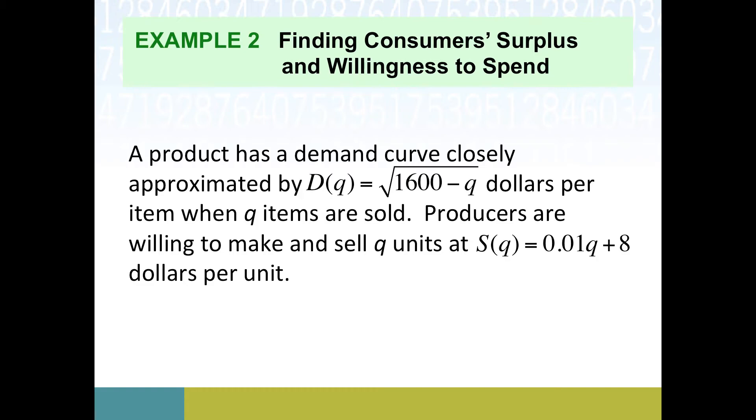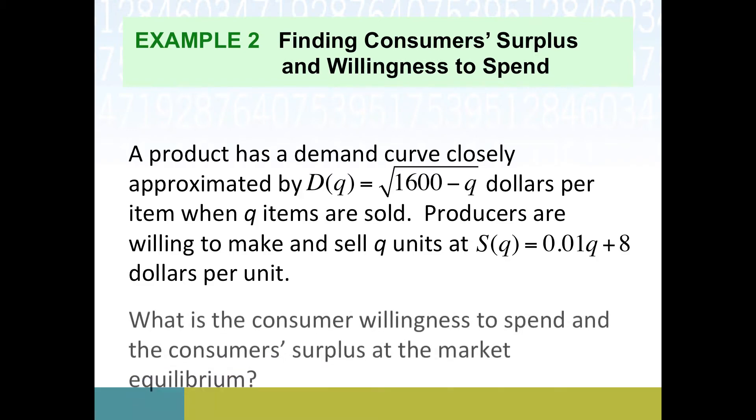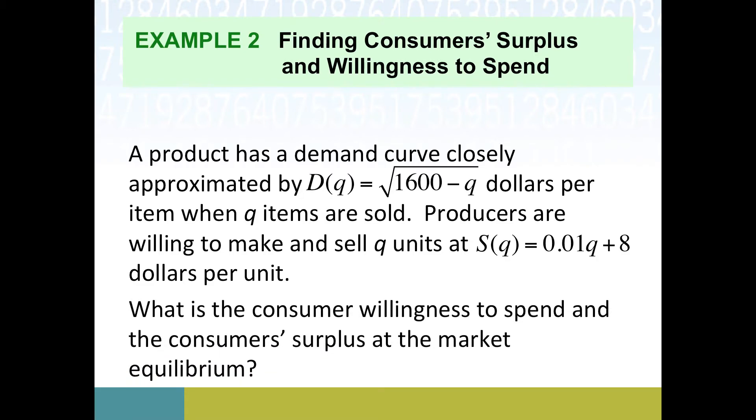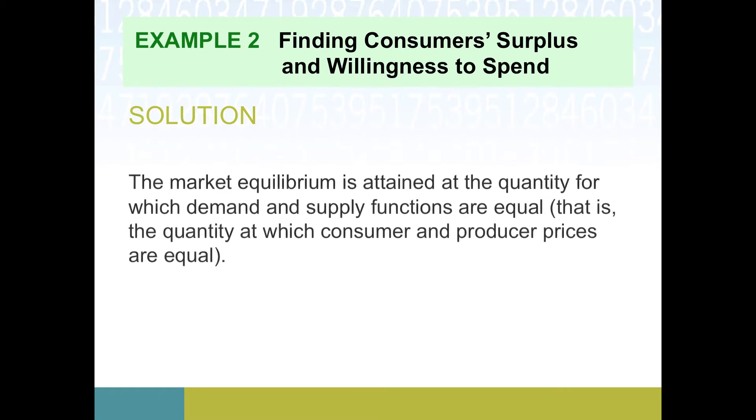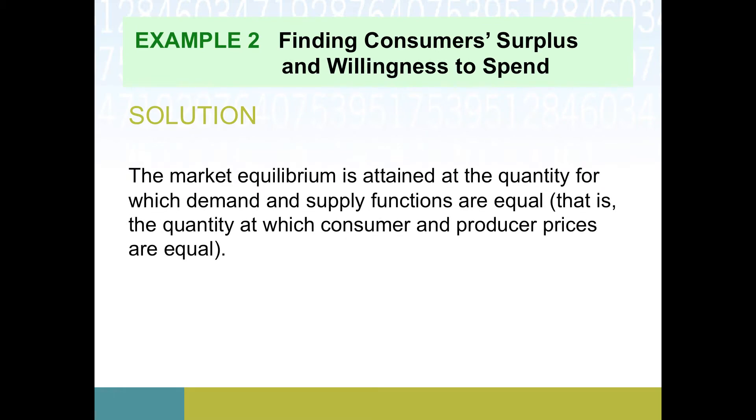Let's look at the supply side of this as well so we can bring back a topic we haven't talked about for a little bit, which is market equilibrium. Here's our supply curve, it's much nicer, it's just a line, S(q) = 0.01q + 8. The two questions we are in charge of answering are: what is consumer willingness to spend and what is the consumer's surplus, both measured at market equilibrium.